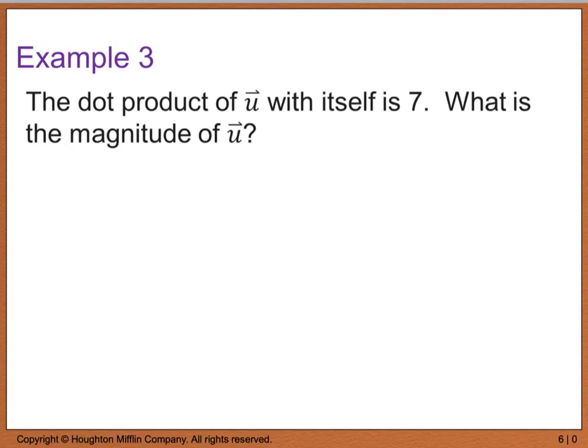Example 3 tells us the dot product of vector u with itself is 7. We want to know what is the magnitude of u. Well, back on your properties of dot products, you were told that if we took a vector and dotted it with itself, we end up with the magnitude of u squared, and we know that this is equal to 7. So if I know that the magnitude squared equals 7, if I want to find just the magnitude itself, I want to get the magnitude of u by itself, I'm going to square root both sides, and I see that the magnitude or my length is equal to the square root of 7.